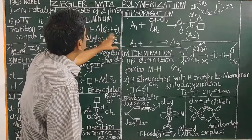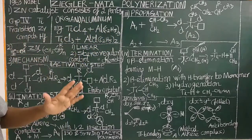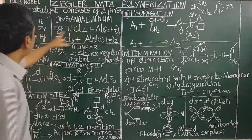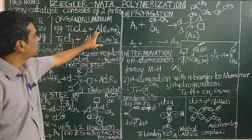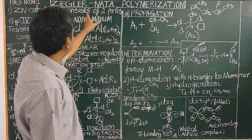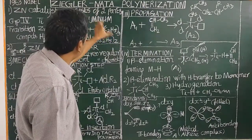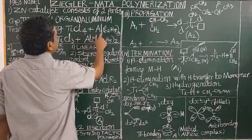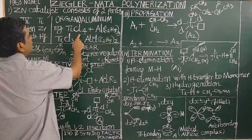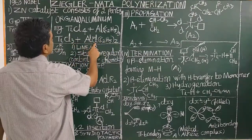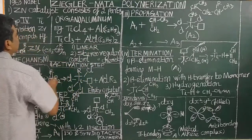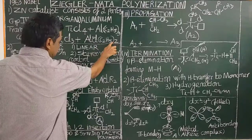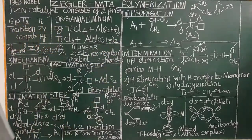Triethyl aluminium is commonly used as a co-catalyst. Titanium tetrachloride is used as the catalyst, and triethyl aluminium is used as the co-catalyst. In this case, chlorine is involved, giving AlCl(C2H5)2.